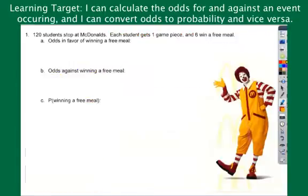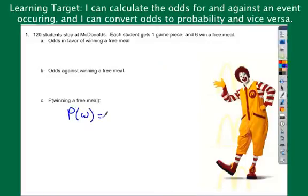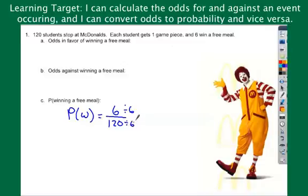120 students stop at McDonald's. Each student gets one game piece and six win a free meal. For straight probability, there are 120 game pieces so the total number of possible outcomes is 120. There are 120 who could possibly win, but only six of them do. So six out of 120 — dividing by six gives one out of every 20 students win.